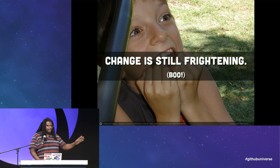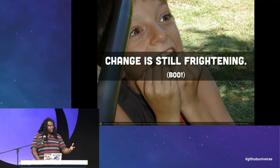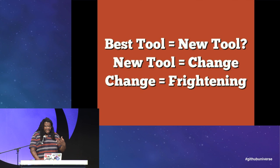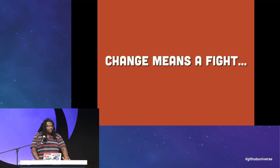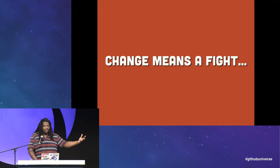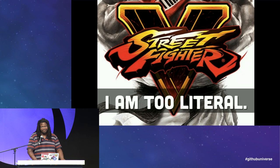How does this bad news collide with the good news? Imagine you found some really great open source project that's unknown to the stakeholders in your organization. The best tool for the job is a new tool, and that new tool is a vector for change — and change is frightening. Any time you're trying to introduce new tools to stakeholders in your enterprise, it can mean a fight. And when I think about a fight, I think of Street Fighter 5.